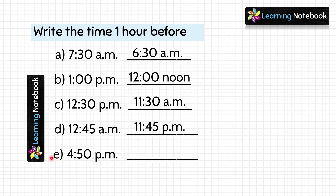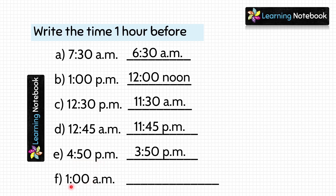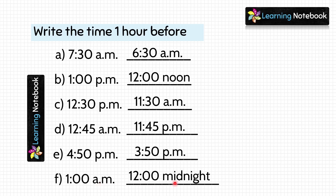Next part is 4.50 PM. 1 hour before this time will be 3.50 PM. Last part is 1 AM. 1 hour before 1 will be 12. This AM means the time is after midnight, so this 12 is midnight. We will write the time as 12 midnight.